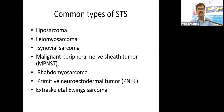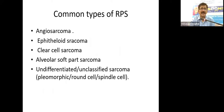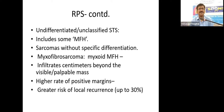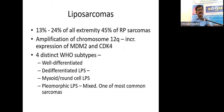Common soft tissue sarcomas occurring in the retroperitoneum include liposarcomas, leiomyosarcomas, synovial sarcomas, malignant peripheral nerve sheath tumors, rhabdomyosarcoma, primitive neuroectodermal tumors, extraskeletal myxoid sarcoma, angiosarcoma, epithelioid sarcoma, clear cell sarcoma, alveolar soft part sarcoma, and undifferentiated sarcomas. Previously the most common classified tumor was malignant fibrous histiocytoma, but with IHC staining, many are now reclassified as defined sarcomas.